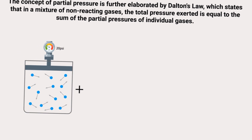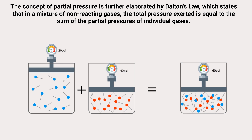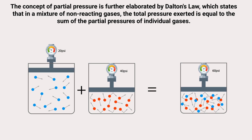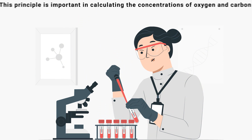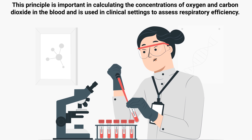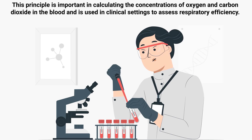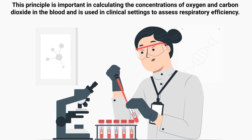This efficient gas exchange is vital for maintaining the body's pH balance and for oxygenating the blood. The concept of partial pressure is further elaborated by Dalton's Law, which states that in a mixture of non-reacting gases, the total pressure exerted is equal to the sum of the partial pressures of individual gases. This principle is important in calculating the concentrations of oxygen and carbon dioxide in the blood and is used in clinical settings to assess respiratory efficiency.